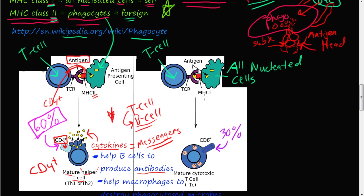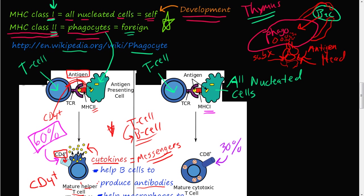Now let's go over to the major histocompatibility complex class 1. Class 1 is on all nucleated cells, and it helps to distinguish self. These MHC class 1 molecules are beneficial not only in displaying normal self to T-cells, but they can also display antigens — through viruses or tumor cells. So say this MHC class 1 is residing on all your nucleated cells and a virus comes in.